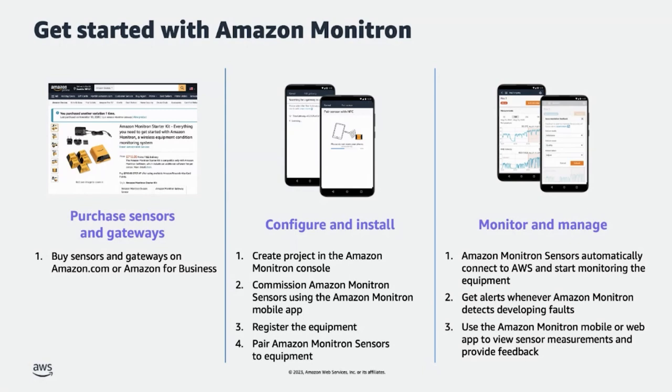No special training is required. Once the sensors and gateways are set up, sensors automatically connect to the AWS cloud via the gateway and Monitron starts monitoring the equipment. Reliability managers and technicians get alerted when Monitron detects potential failure. In the mobile app, technicians can view measurement data and provide feedback on alerts received to help improve accuracy of the system. It's that easy to get started with Monitron.